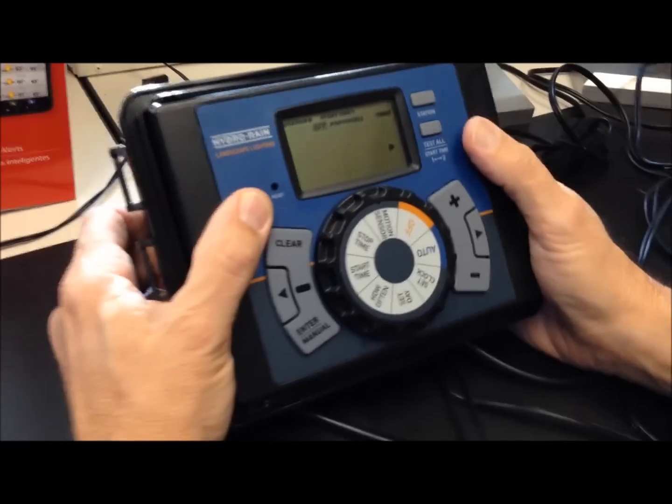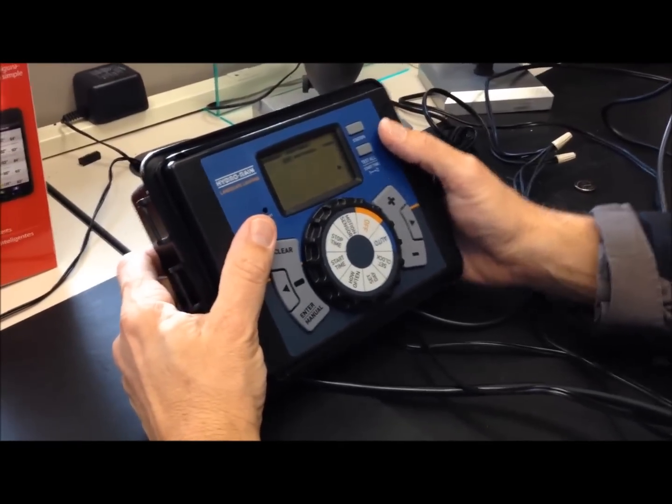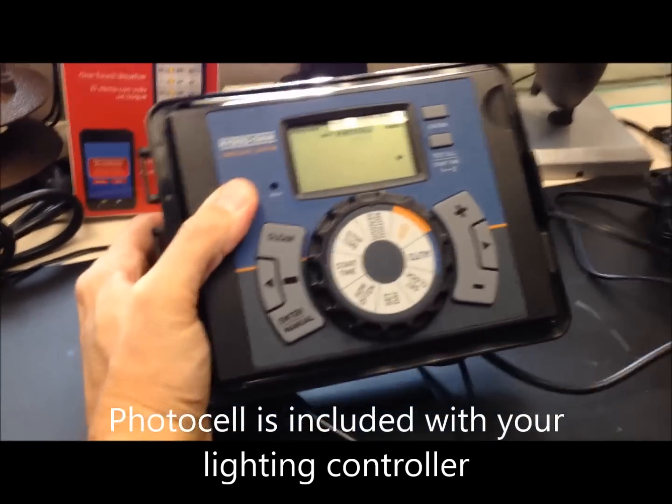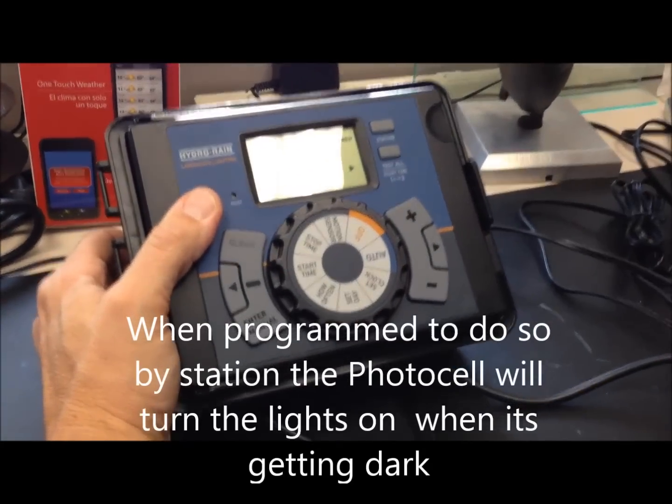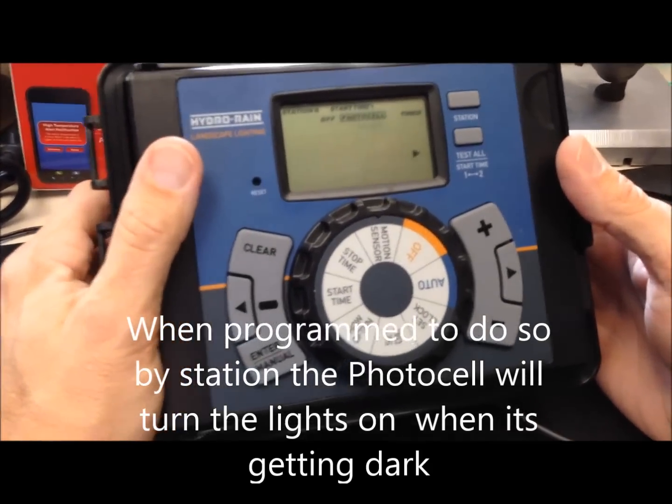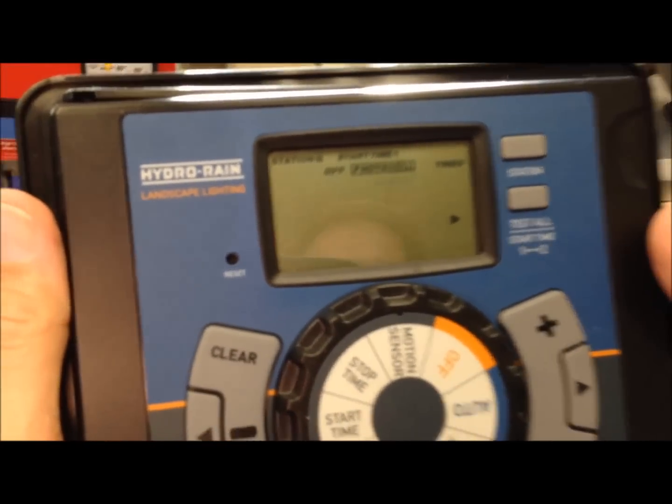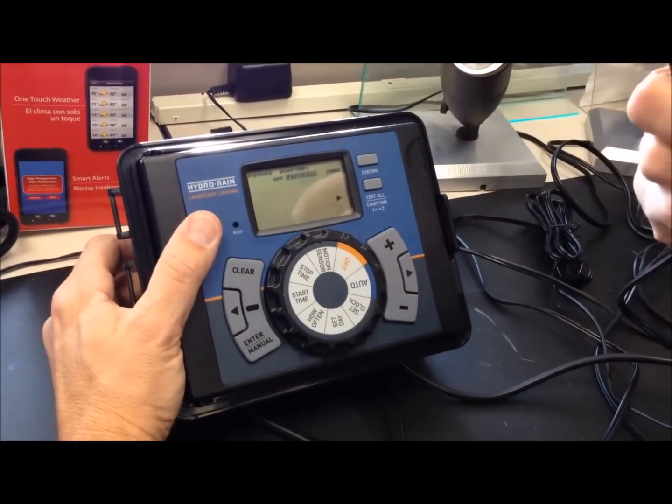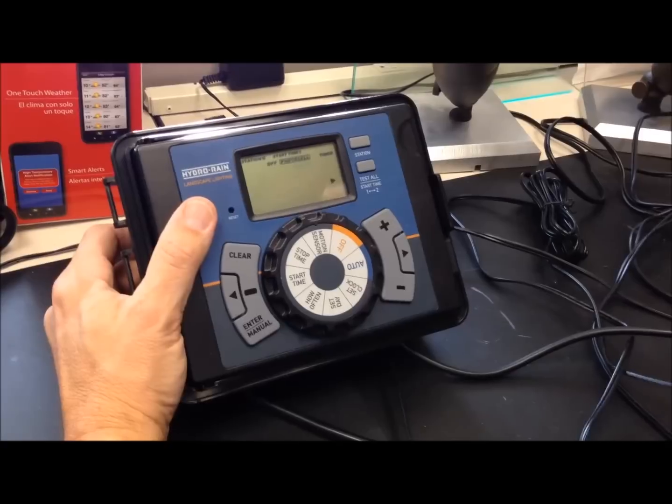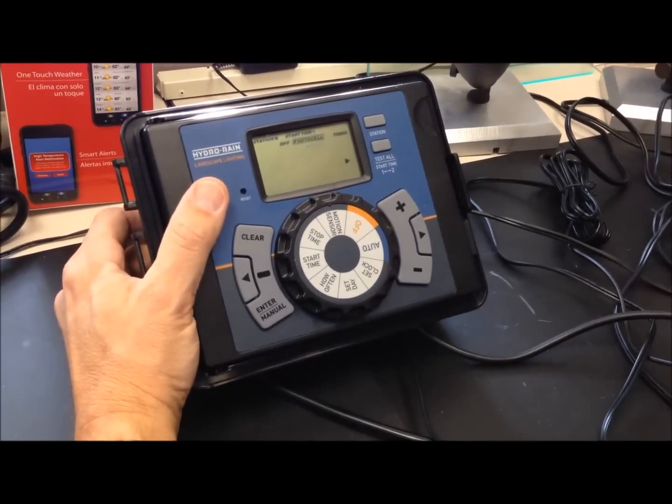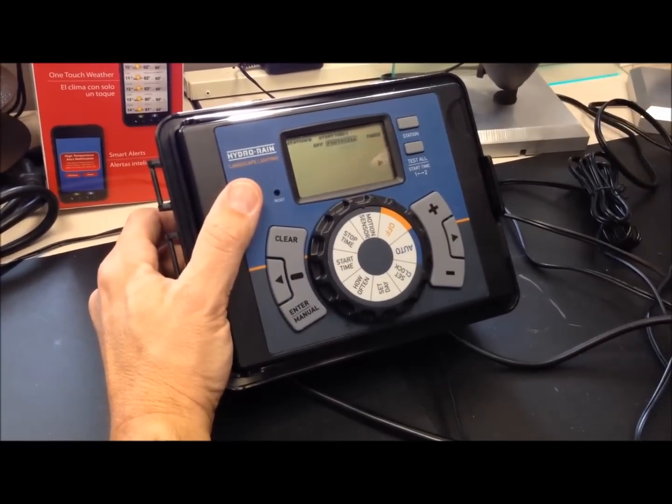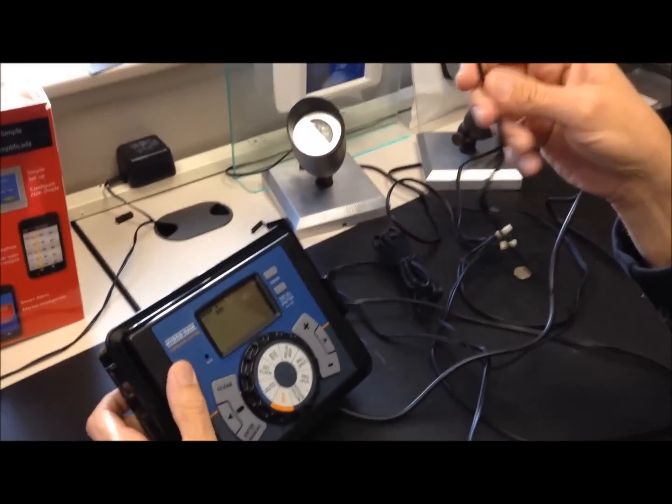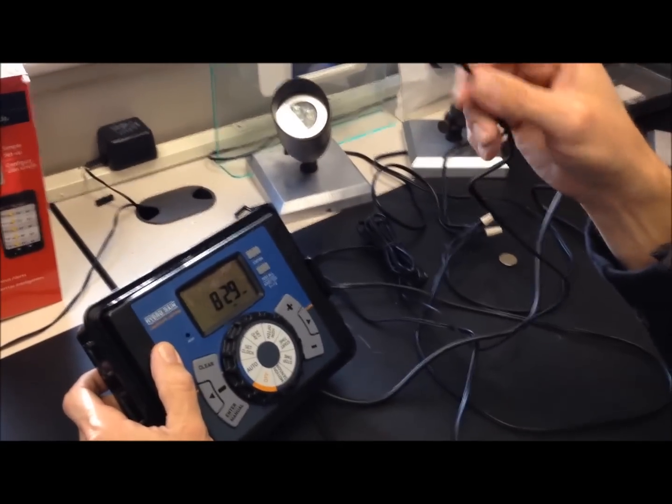Now for setting a time, you have several options. You can right arrow over to photocell, and when you have the provided photocell installed, the lights will come on when it gets dark. Now one thing to know, if you're testing the system, if you take the photocell and cover it, you're not going to get an immediate indication that the photocell is seeing dark. It takes several minutes. It takes three to five minutes for the photocell to indicate light or dark.